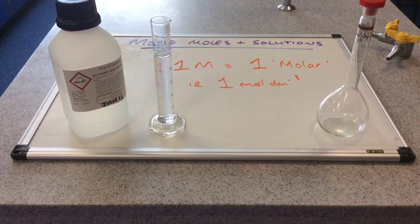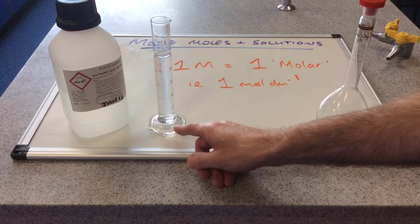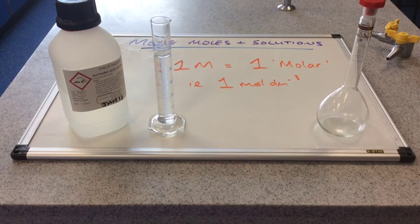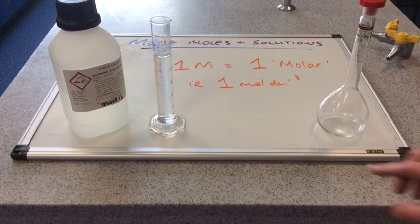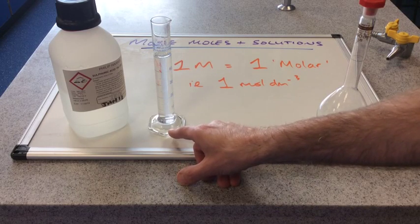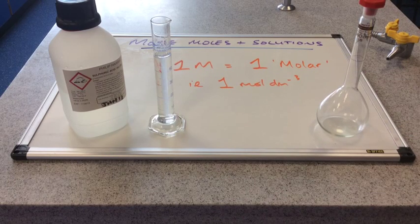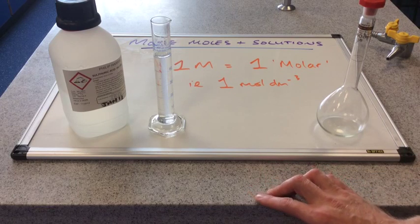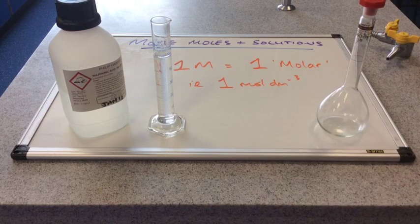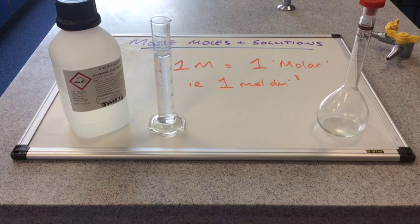One thing I want to say, when you do this for real in the lab, when you're making up proper solutions, you wouldn't use a measuring cylinder. You would use something called a pipette because measuring cylinders aren't very accurate. But I'm going to do another video on making these standard solutions. So you'll see me using the correct apparatus. But it's fine just to make this point.